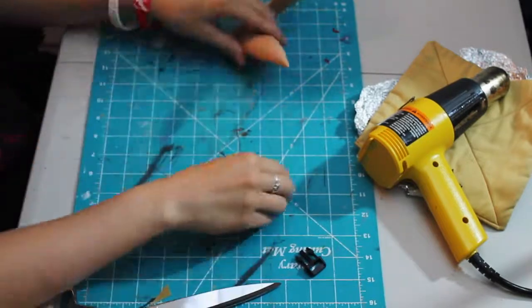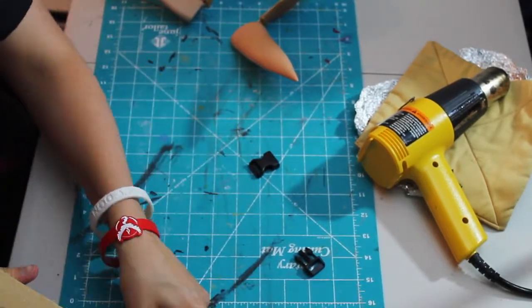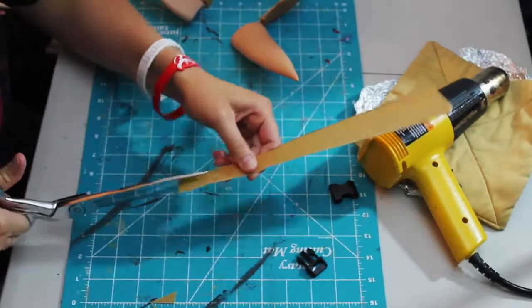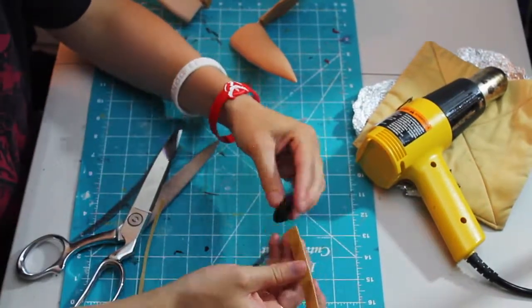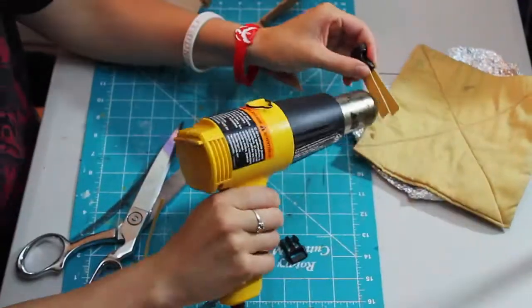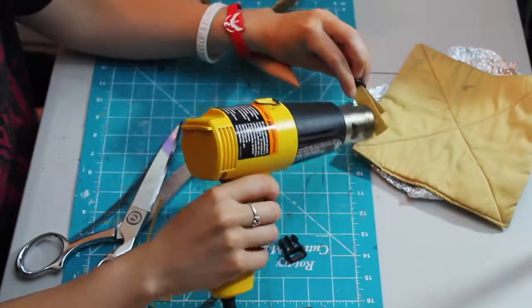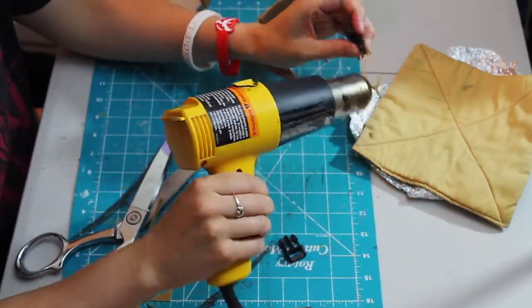Now I need to add an attachment point so the new headband will stay securely on my head. I used a parachute buckle and some elastic to do so, securing it all firmly with more warbler.